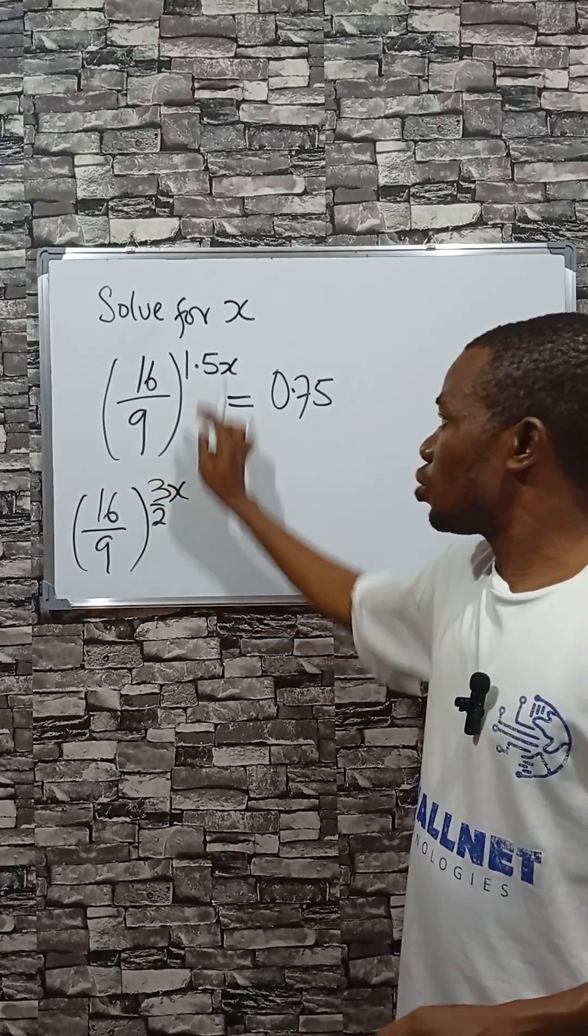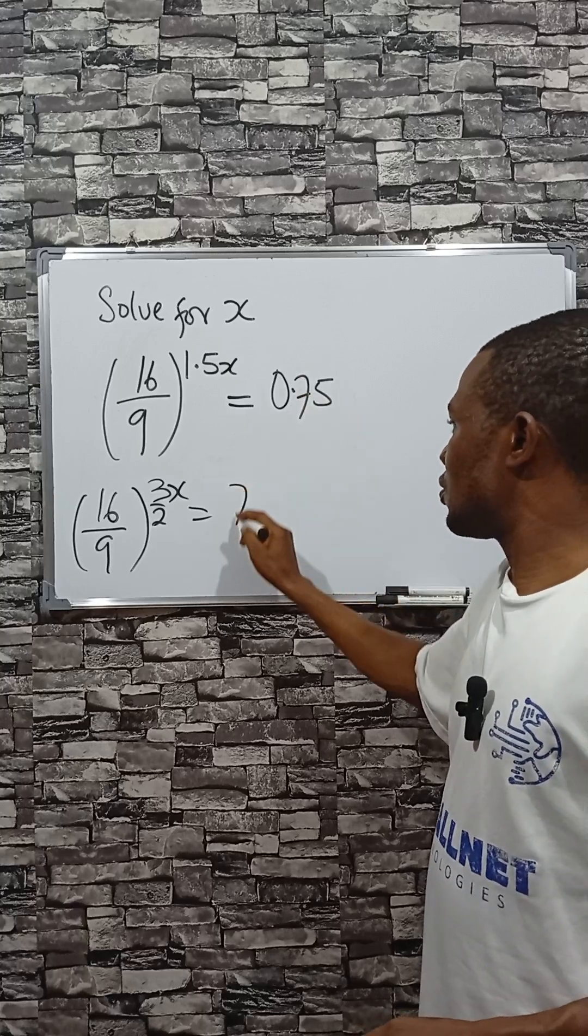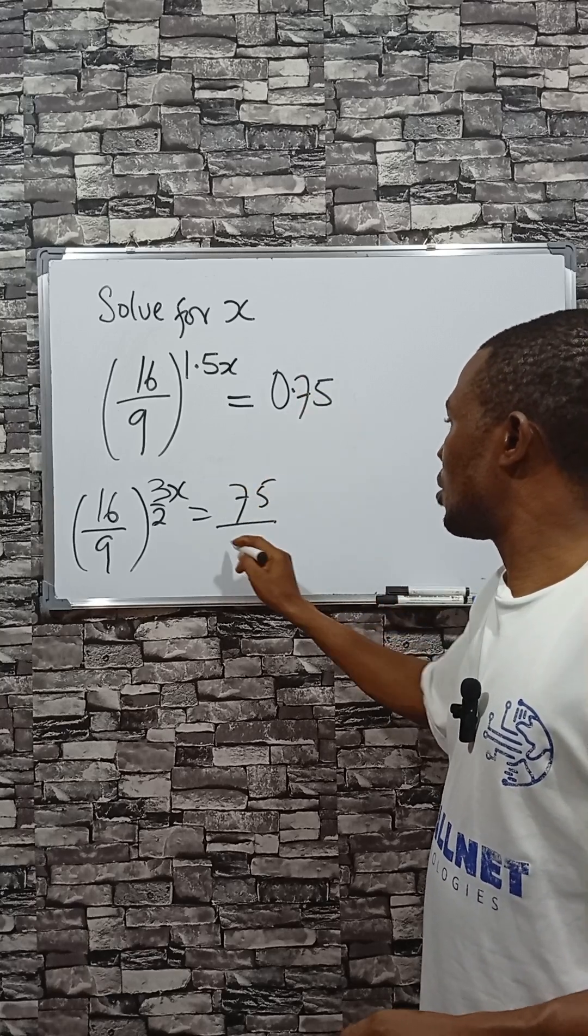3 divided by 1.5 and express this as 75 divided by 100.